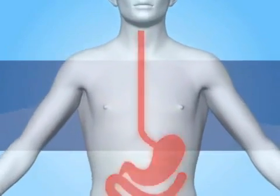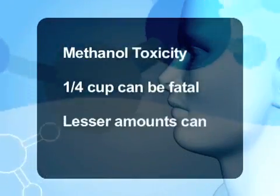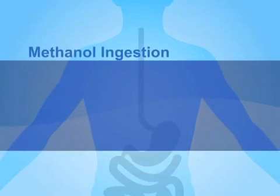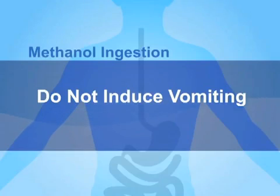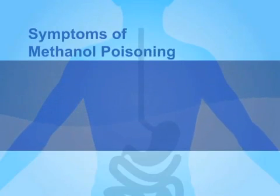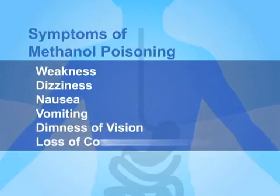Never ingest methanol. Because it's an alcohol, people sometimes believe it's no different than a potable alcohol — but it's not. Methanol is particularly toxic when ingested. As little as one quarter cup of methanol can prove fatal, and lesser amounts are known to cause irreversible blindness. If you suspect someone has ingested methanol, do not induce vomiting — seek medical attention immediately. Symptoms of methanol poisoning may take up to 24 hours to appear and include weakness, dizziness, nausea, vomiting, dimness of vision, and loss of consciousness.